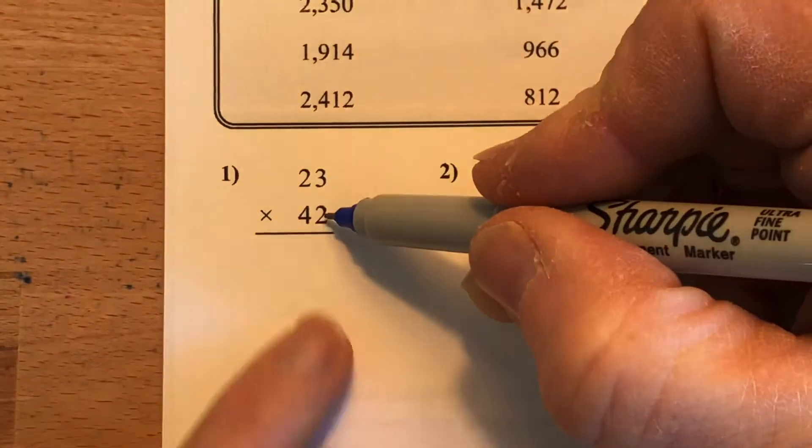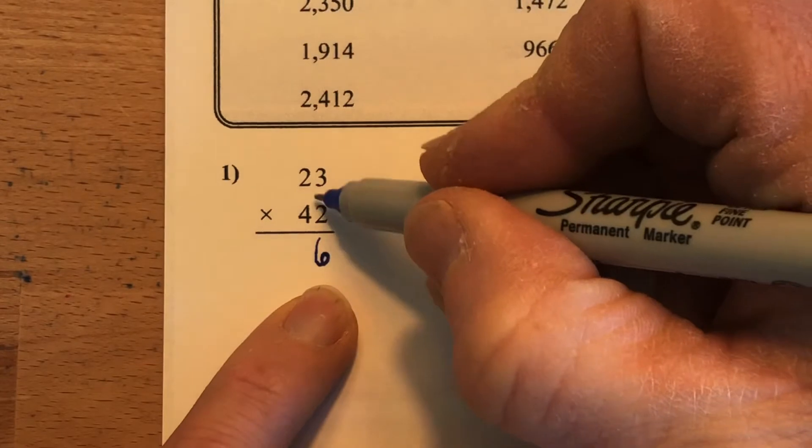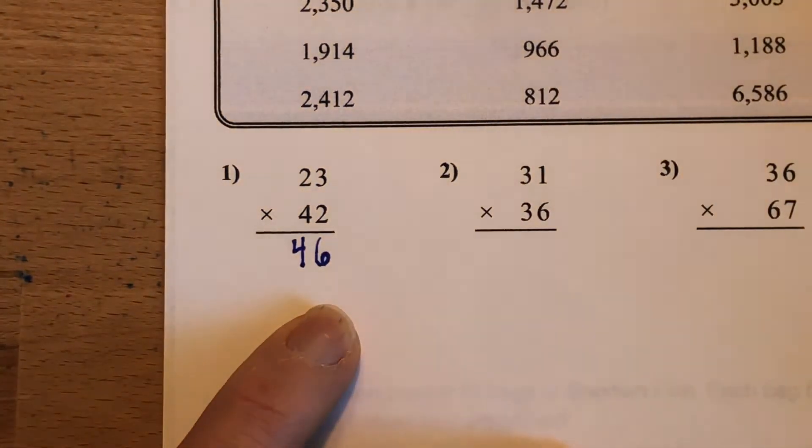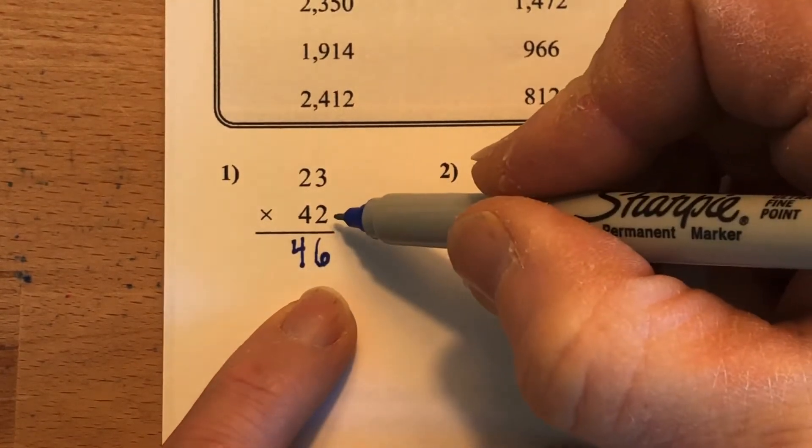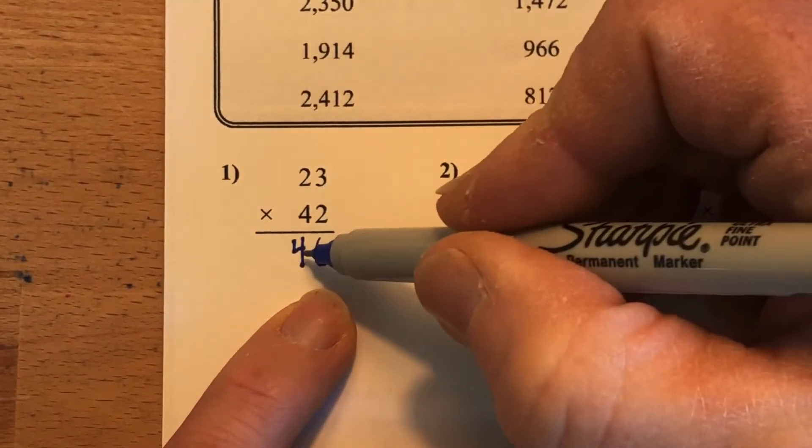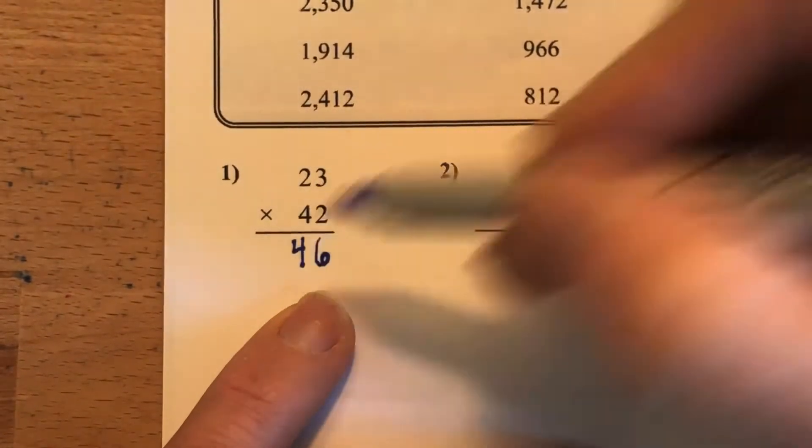So I start with my ones place down here. 2 times 3 is 6. 2 times 2 is 4. That's it. See how I did 2 times 3, 2 times 6, that's what I got. So essentially I did 2 times 23, and that's 46, and that makes sense. 2 threes is 6, 2 twenties is 40, right?